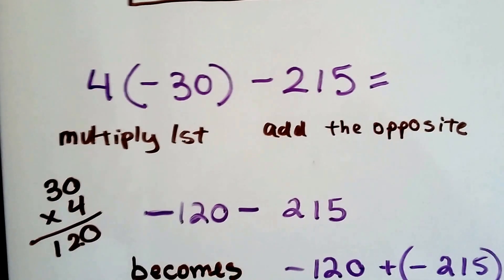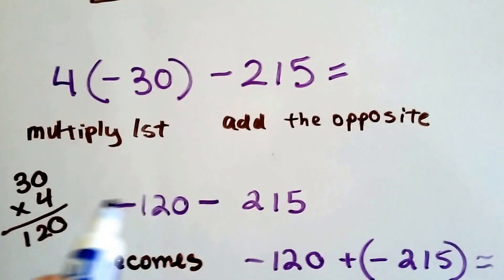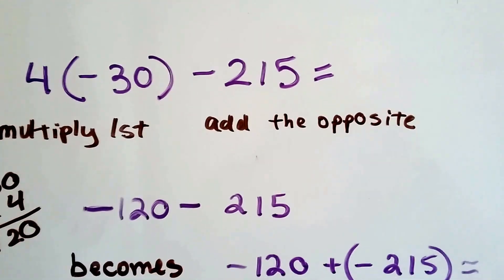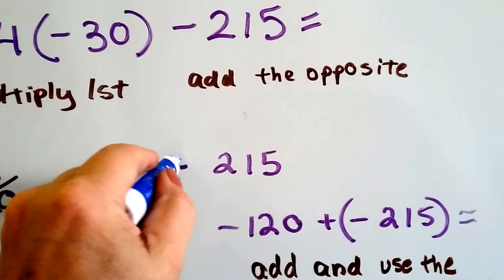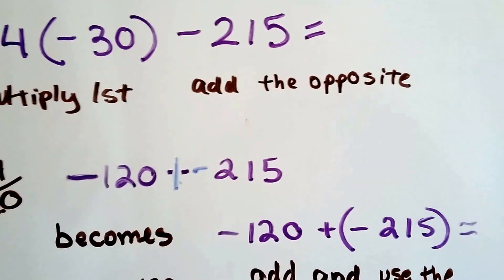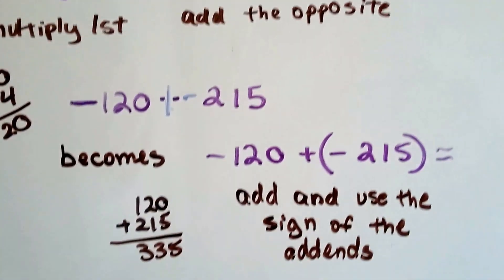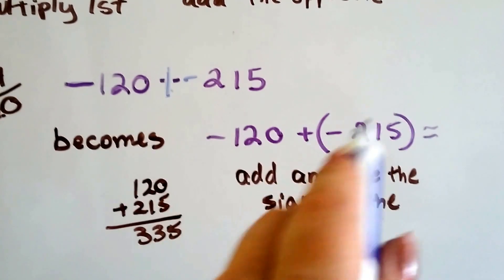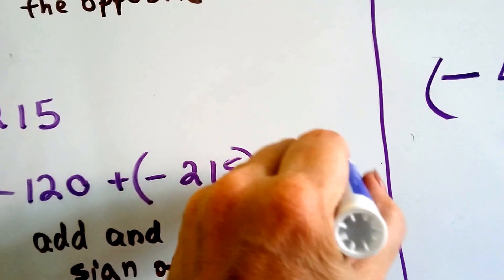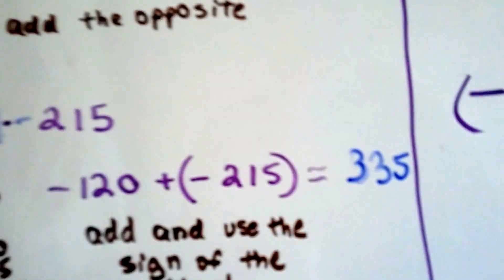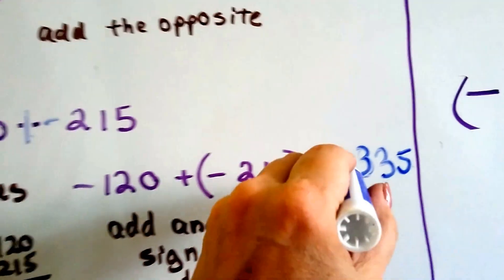Now we need to take away this 215. We have negative 120 minus 215. When we're subtracting negative integers, we add the opposite. So this negative 120 — we're going to add the opposite, and that becomes a negative. So now it becomes negative 120 plus negative 215. Because we're adding like signs, we just add them and get 335. We take the sign of the addends — they're both negative — so it's going to be negative 335.